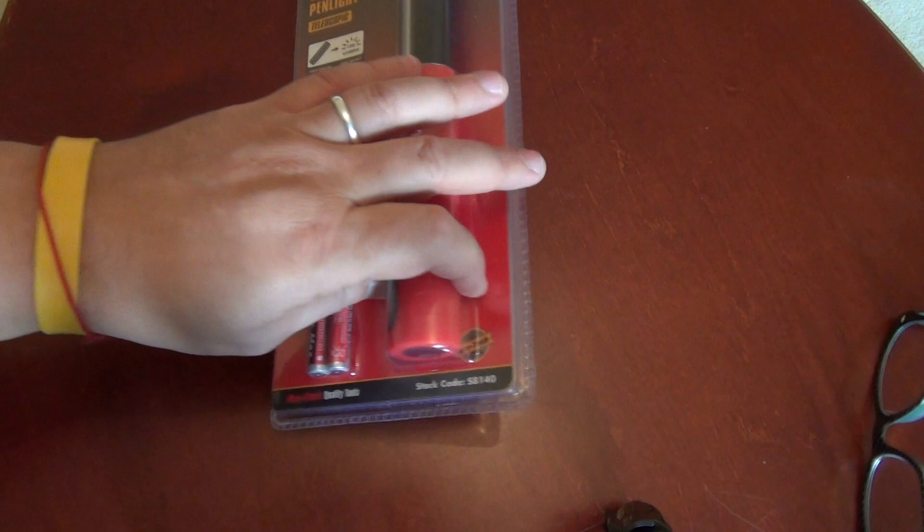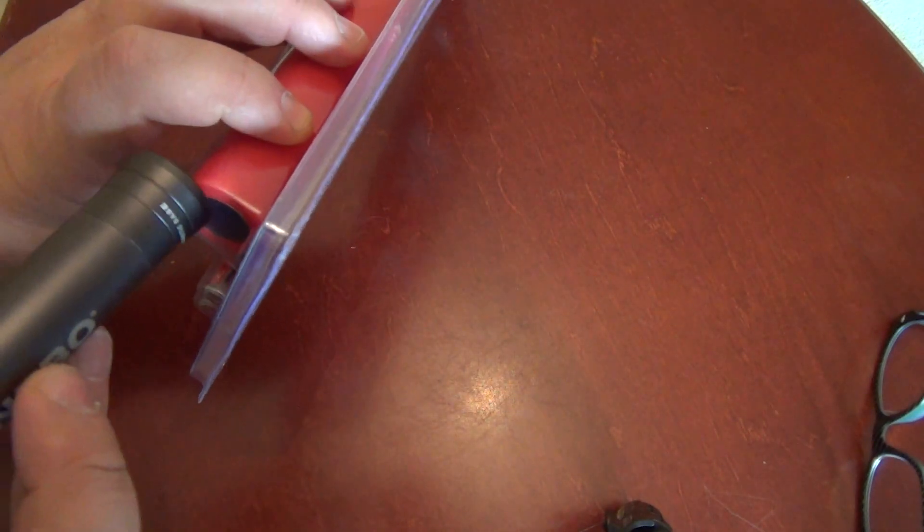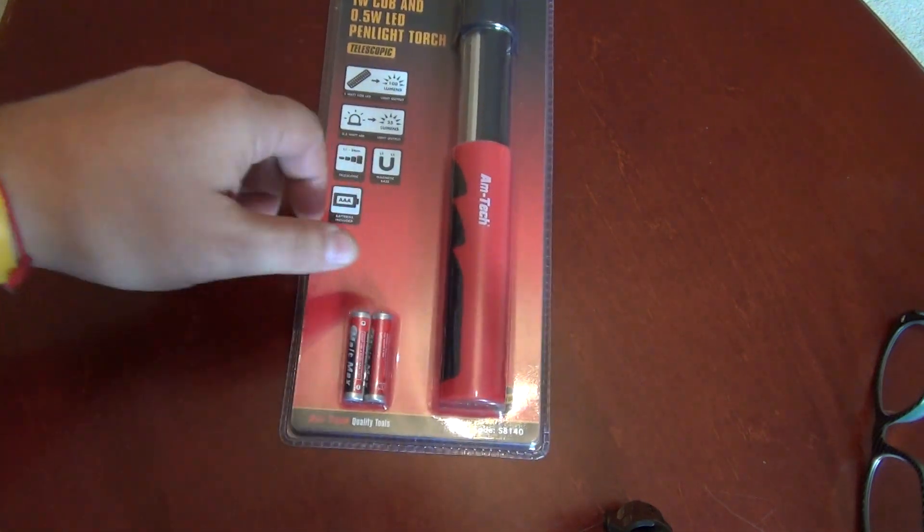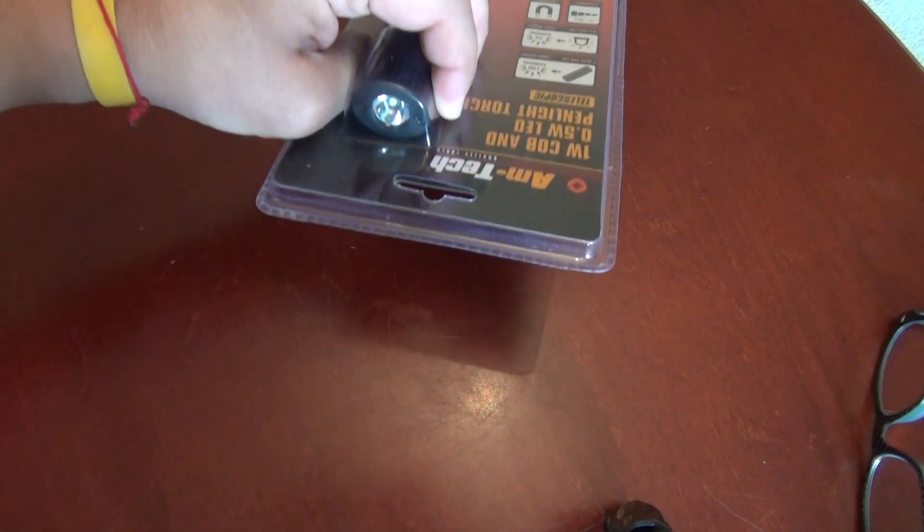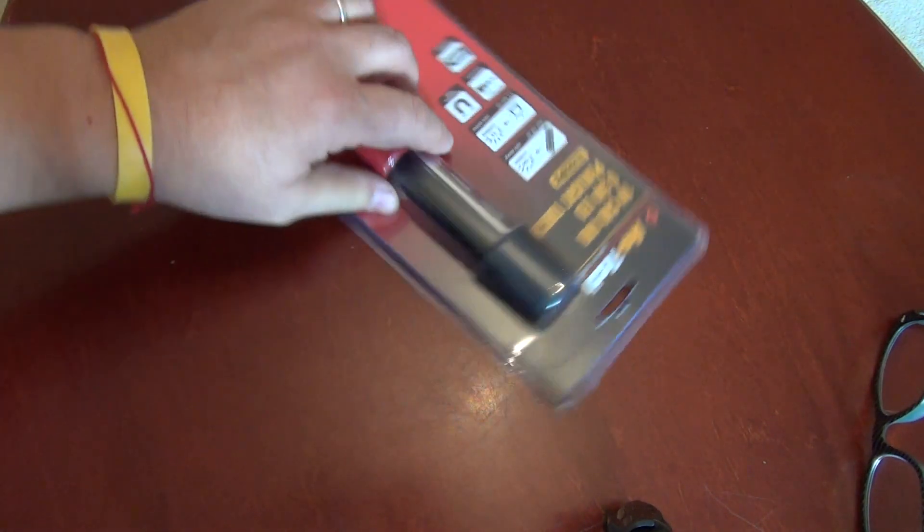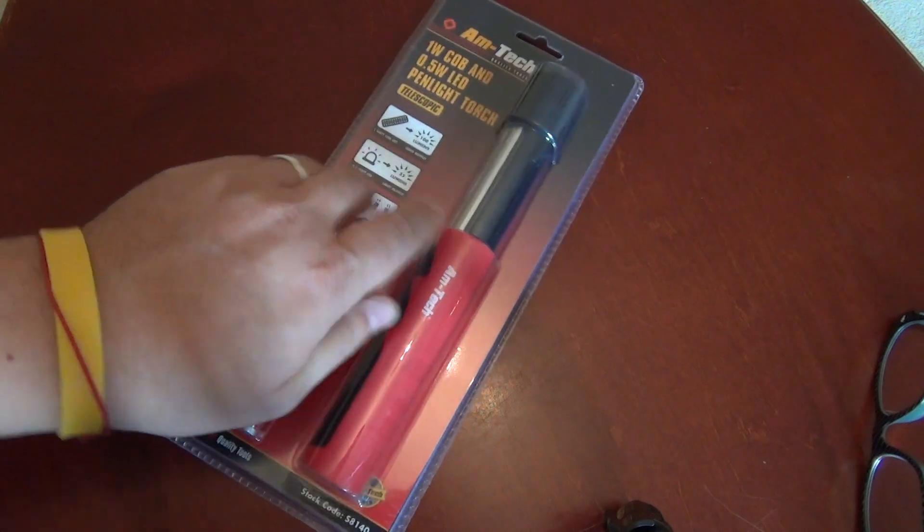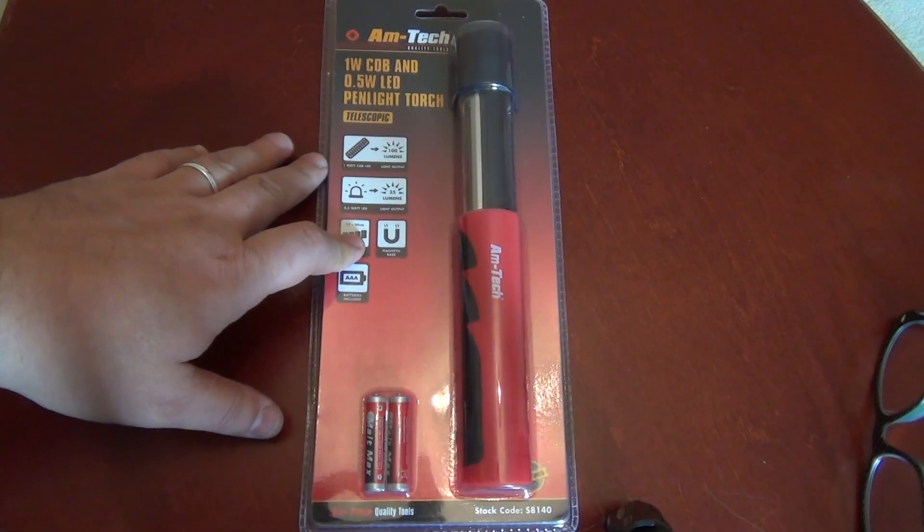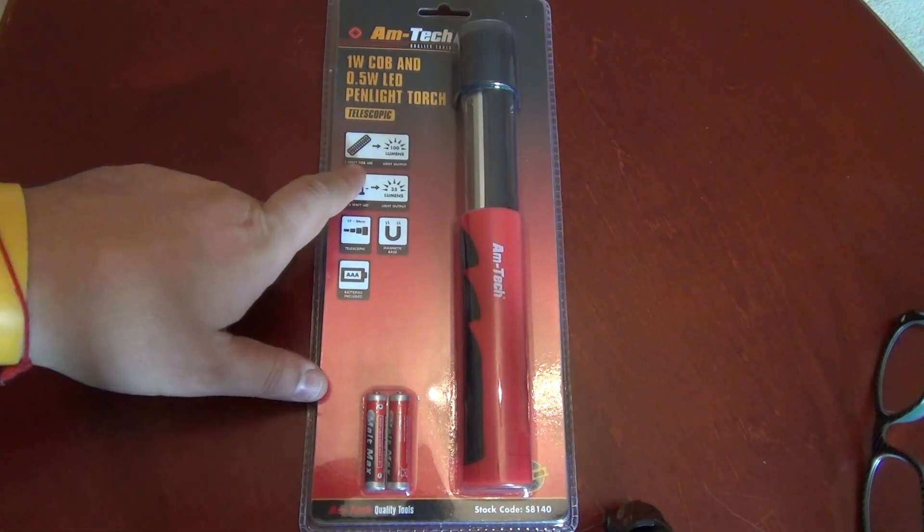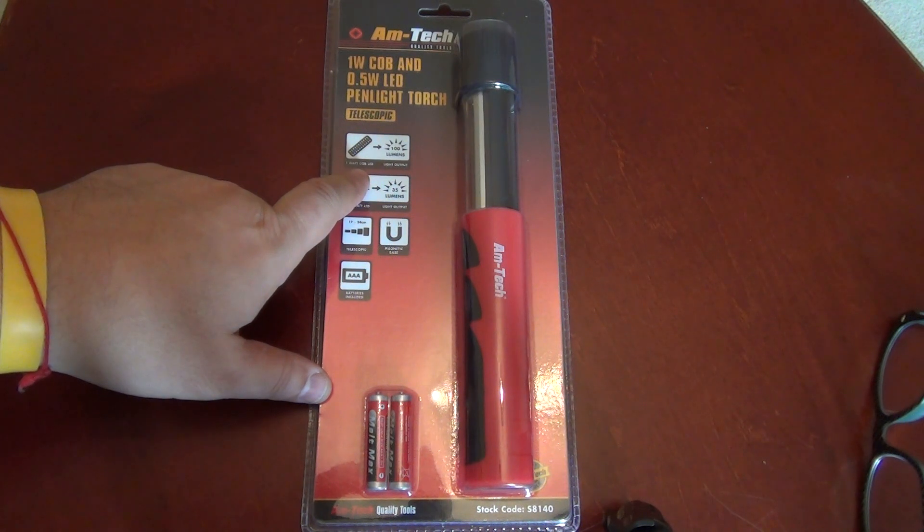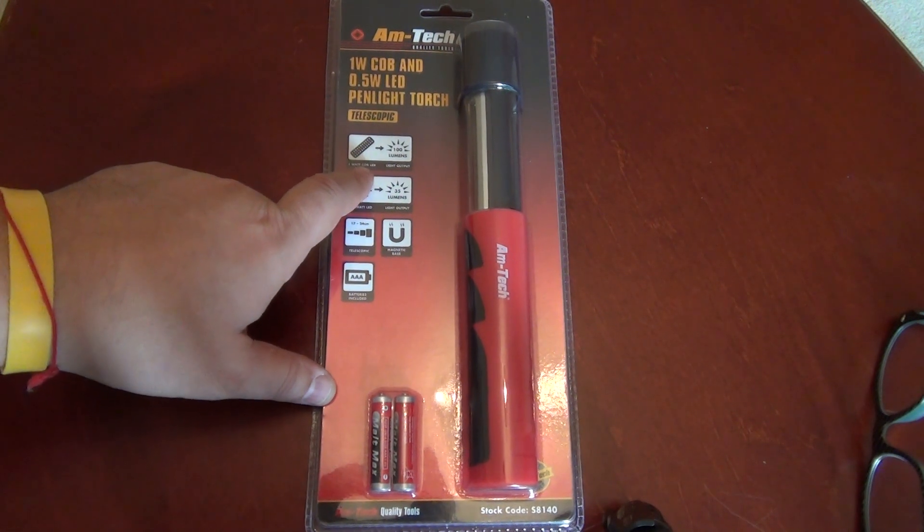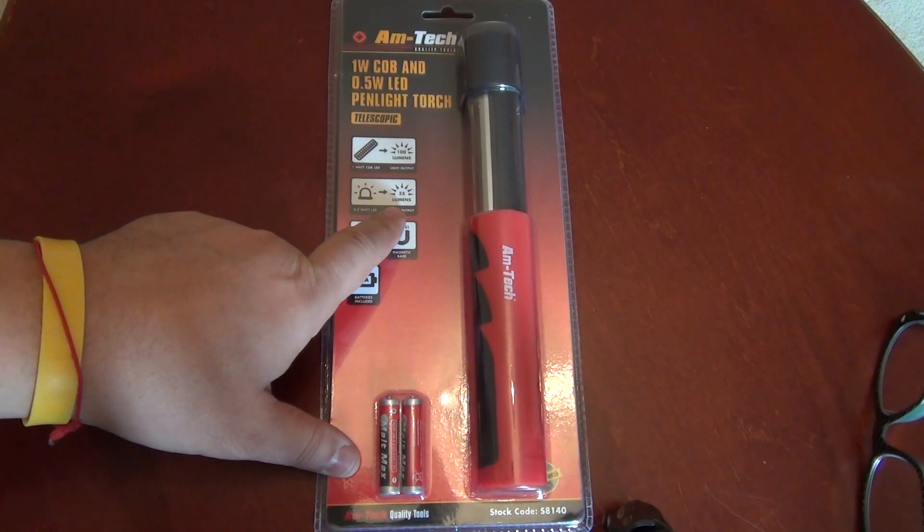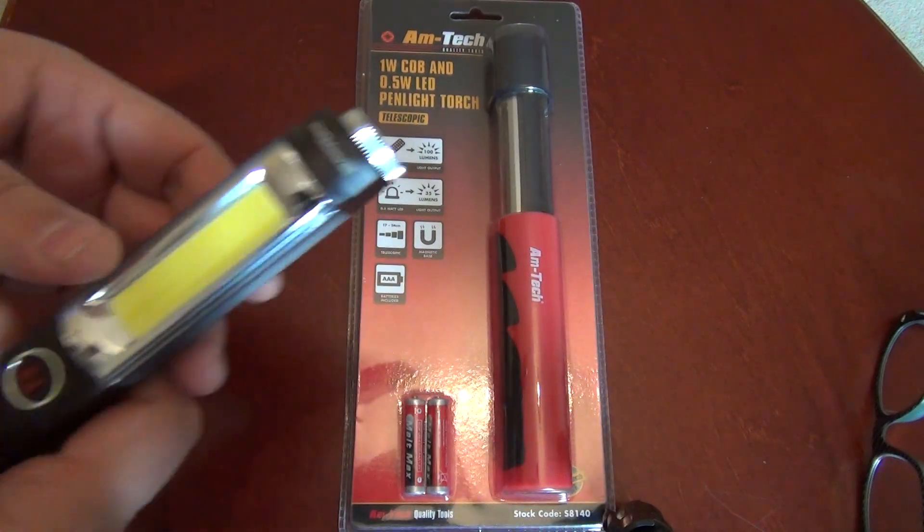They both have magnets at the bottom and both have a flashlight plus the working light. According to specifications, the working light is about 100 lumens while the flashlight is about 35 lumens.